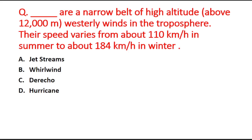Next question: Blank are a narrow belt of high altitude westerly winds in the troposphere. Their speed varies from about 10 km per hour in summer to about 184 km per hour in winter. Option A is jet streams, B is whirlwind, C is derecho, and D is hurricane. The right answer is option A, jet streams.